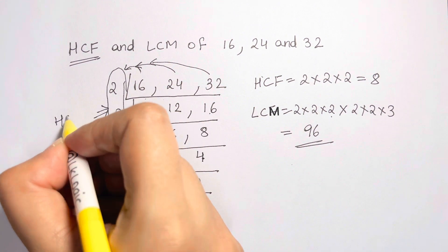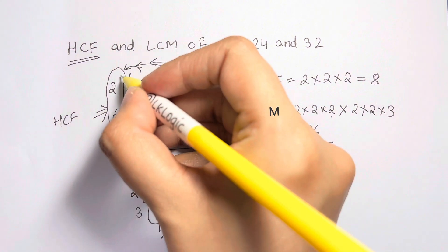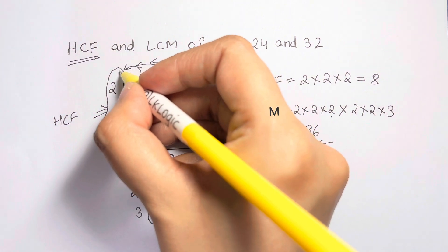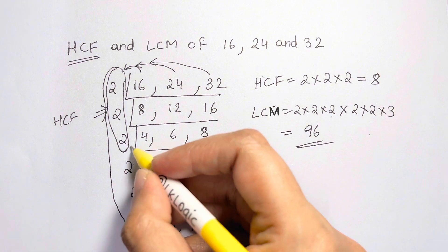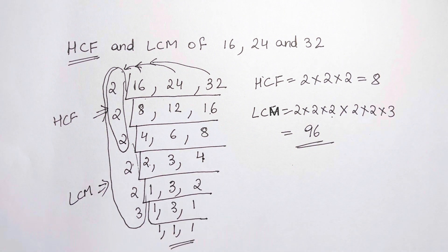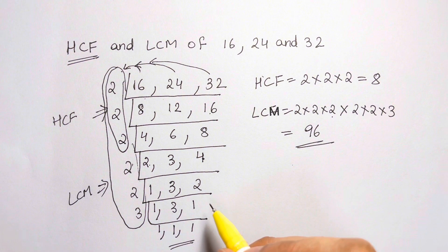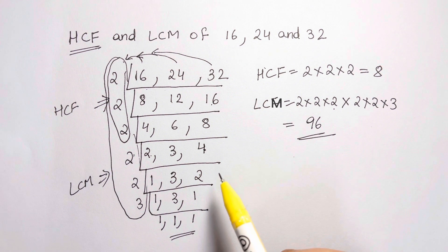So to summarize: the divisors common to all numbers give you the HCF, and when you multiply all the divisors used in the full ladder together, that gives you the LCM. This method is much easier and you won't get confused. Thank you so much — bye-bye, take care!